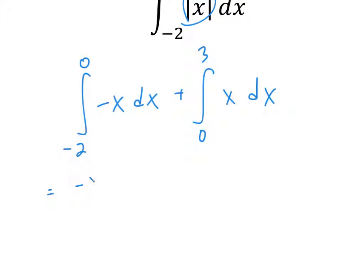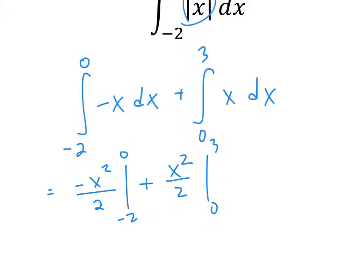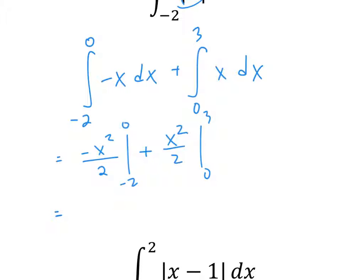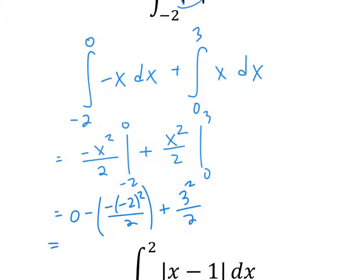So this is going to be negative x squared over two evaluated from negative two to zero, plus x squared over two from zero to three. Zero minus negative two squared over two, plus three squared over two minus zero — that is going to be four over two. So two plus nine over two, which is 13 over two.